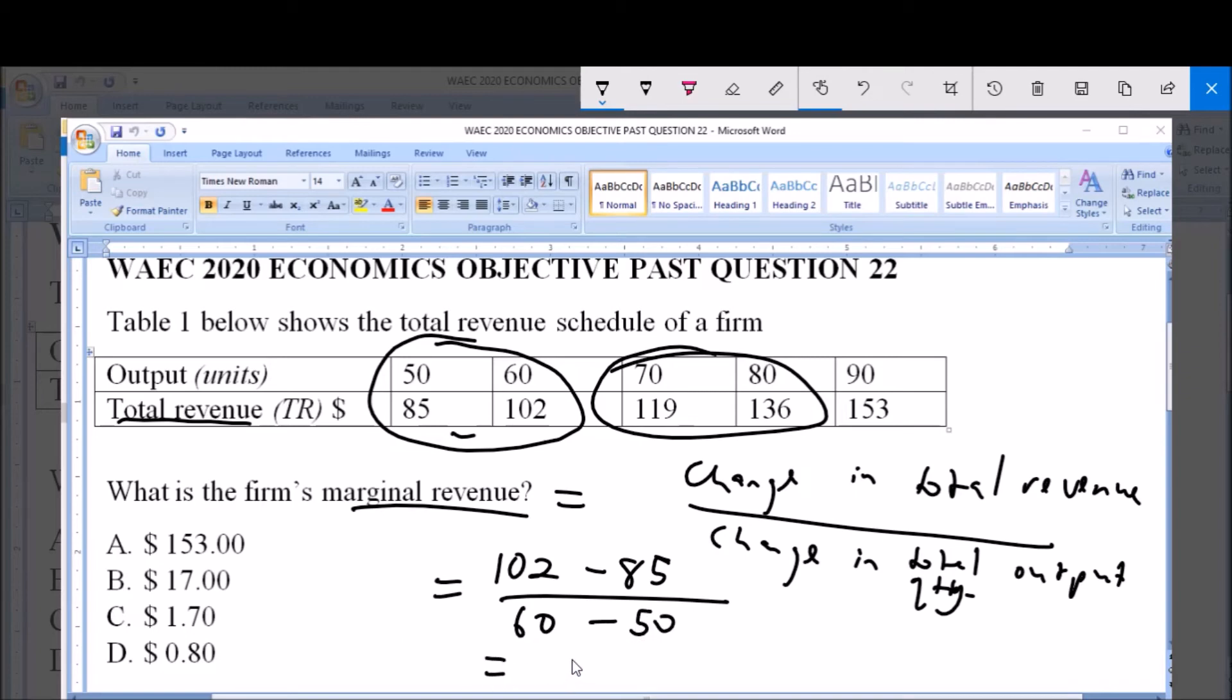So if you do that, that will give you $1.70. $1.70 is option C, so it is the correct answer to that question. Thank you, and please subscribe to this channel for more videos and for more past questions and answers.